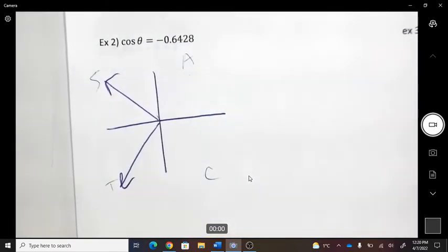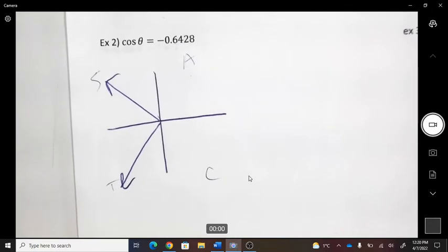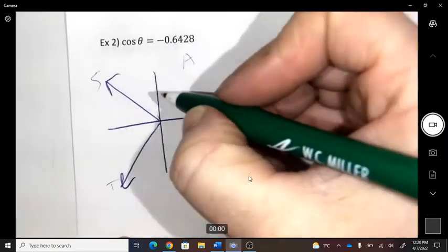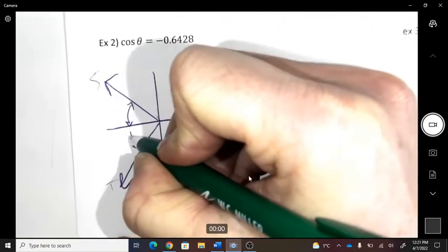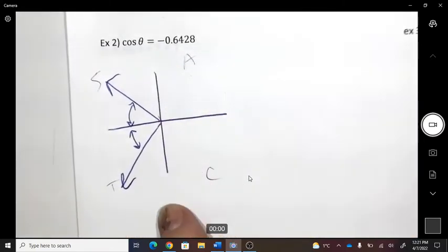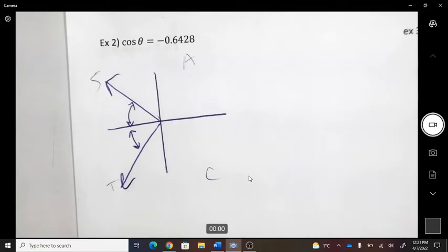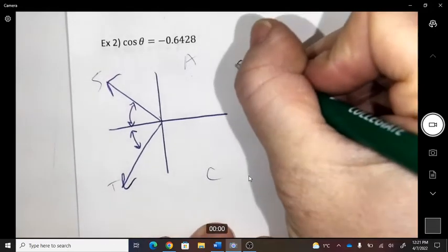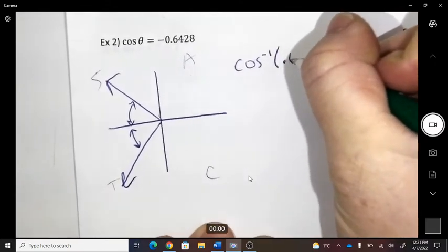Remember what a reference angle is? It always is an angle that connects to the x-axis. Do you remember one very important thing I've told you for this unit? Don't do math with the negatives. Use the negatives for your location purpose. So we've actually already dealt with the negative.